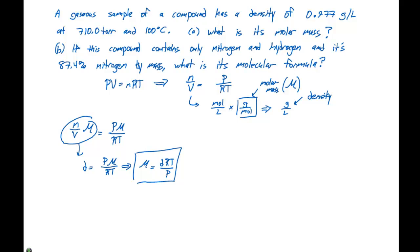For this case, the first part asks what's the molar mass. The molar mass can be represented in terms of the density, temperature, and pressure if we know our gas constant. Our molar mass equals the density, which is 0.977 grams per liter, times R, which is 0.0821 liter atmospheres per mole Kelvin, times the temperature, which is 100 degrees Celsius or 373 Kelvin. We divide this by our pressure, which is 710.0 torr, and convert that to atmospheres by dividing by 760 torr. This gives us a molar mass equal to 32.0 grams per mole.